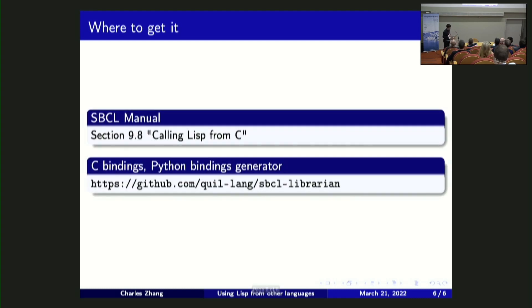So yeah, how you can get it, it's documented in this section that I added. It's recent, so if you have an old copy of the manual it won't be there. But it's that section calling Lisp from C. That's sort of the low level support that SBCL exposes to you.